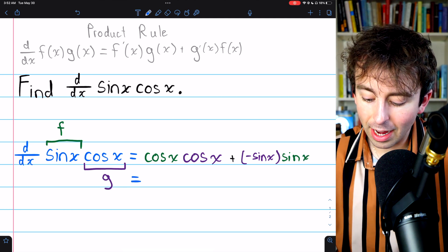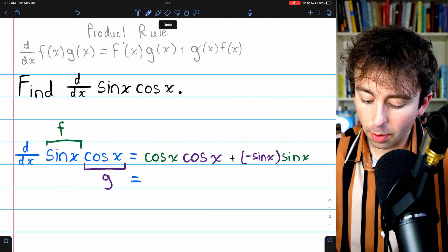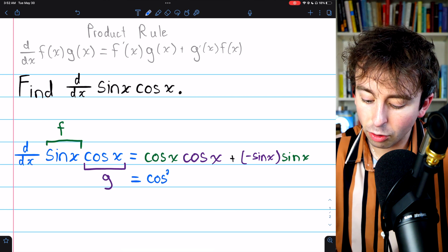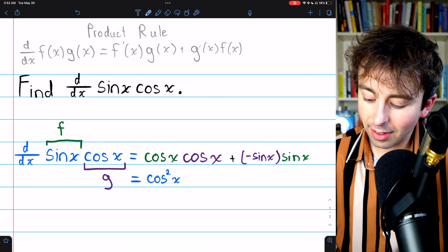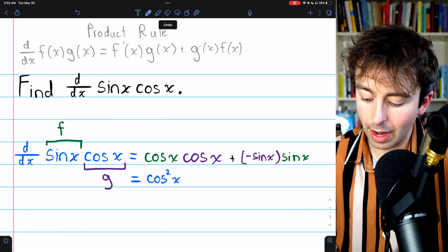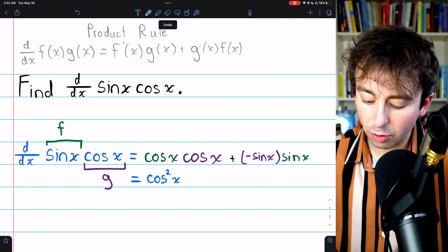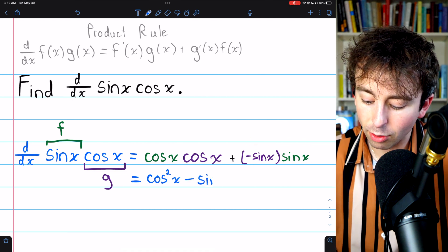We can, of course, do a little bit of simplification here. Cosine x times cosine x is cosine squared x, and then sine x times sine x is sine squared x. It's also negative, so let's just write minus sine squared x.